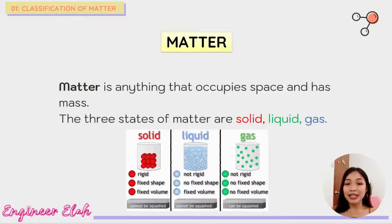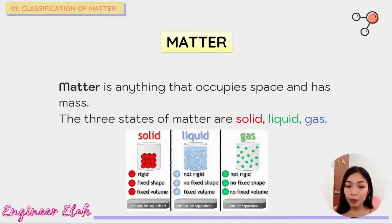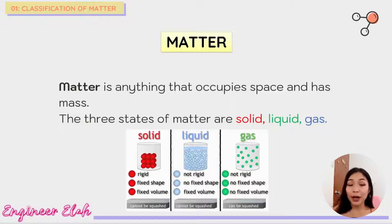Matter has three states: solid, liquid, and gas. We also have other types like plasma and Bose-Einstein condensates, but solid, liquid, and gas are the most common. And they differ from each other based on the arrangement of their particles.